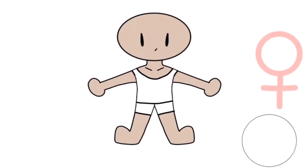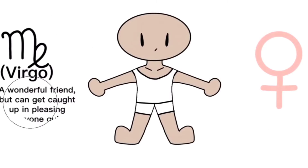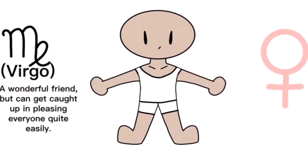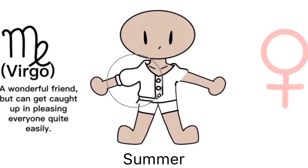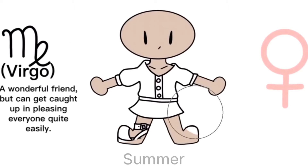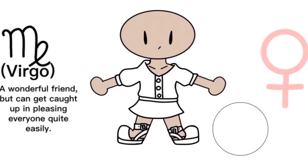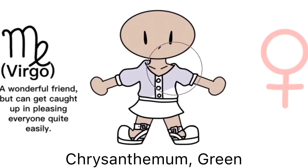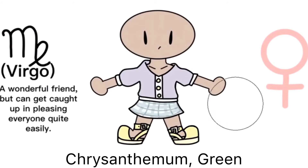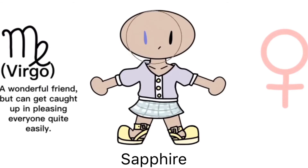The gender is your choice. The personality is based on your zodiac sign. The clothing style is based on the season that you were born in. The color of your clothing is based on your birth flower and or your birth color. The eye color is your birthstone.